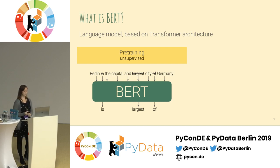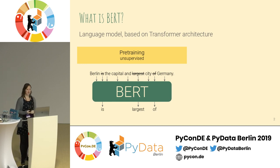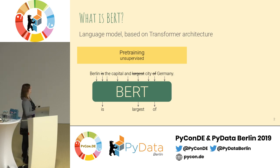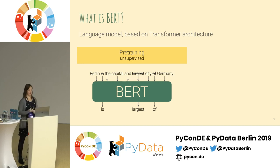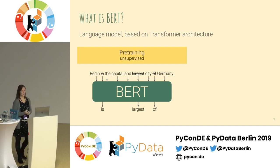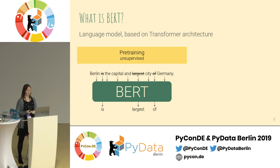This training objective of masking some words and letting the model predict what words were missing sounds quite simple, but it was one of the major novelties in the BERT paper. Because when we ask BERT to predict the word 'largest', it can use the context on the left side of the word as well as the context on the right side. So the learning is bidirectional — the B in BERT also stands for bidirectional. Previous language models were usually trained to predict the next word, and therefore only had access to the context on the left.